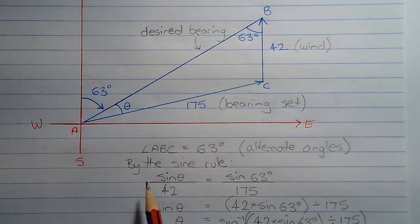So by the sine rule, sine theta over 42 is equal to sine 63 degrees over 175.